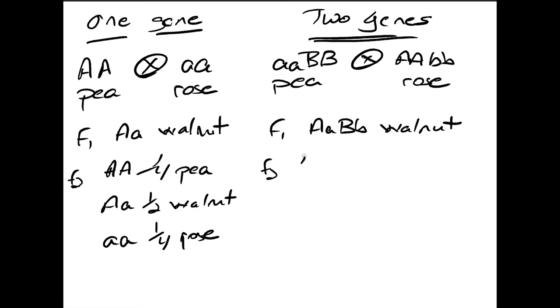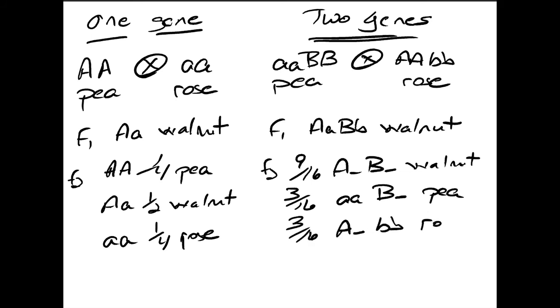In this case, with two genes, we would expect 9/16ths to have a dominant allele for each of the genes, and we would say that is walnut. We expect 3/16ths to be homozygous recessive for one gene and have the dominant allele for the other. We said that one was P and this one is Rose. Then we have 1/16th that is homozygous recessive for both genes. That would give us an additional genotype that we have not seen before, and that would be the single phenotype. I think this is going to be two genes.